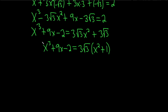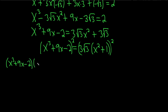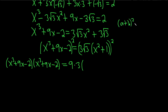Let's square both sides of this equation. The left side is a trinomial squared, so we write (x cubed + 9x − 2) times (x cubed + 9x − 2). On the right side, squaring 3 gives 9, squaring the square root of 3 gives 3, and we square (x squared + 1) using the formula a plus b squared equals a squared plus 2ab plus b squared.